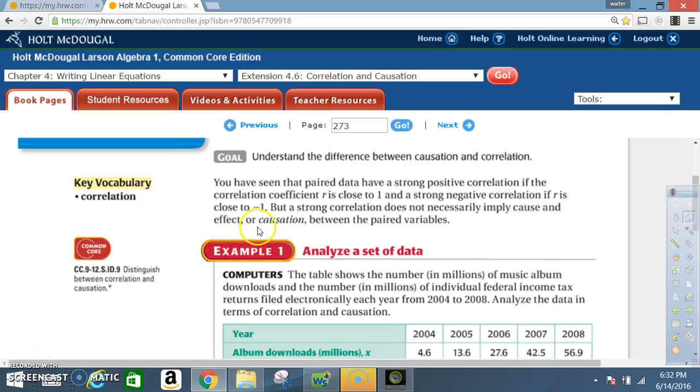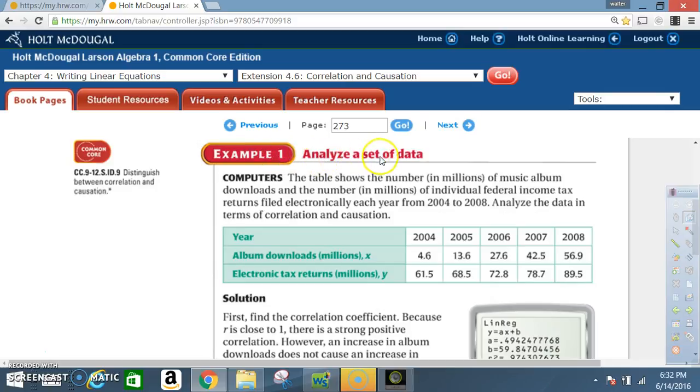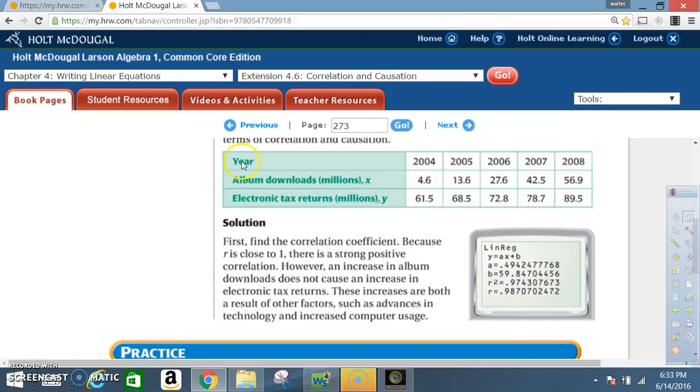Example 1: Analyze a set of data. The table shows the number in millions of music album downloads and the number in millions of individual federal income tax returns filed electronically each year from 2004 to 2008. Analyze the data in terms of correlation and causation.